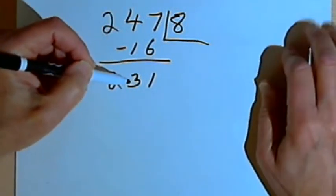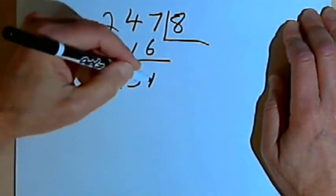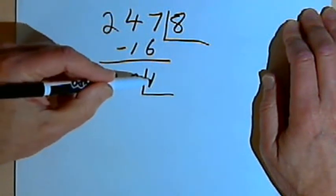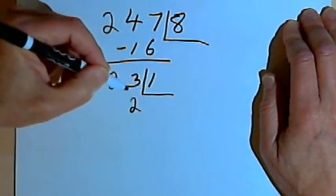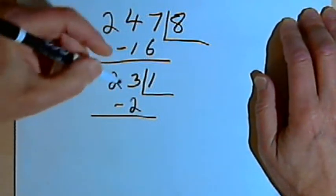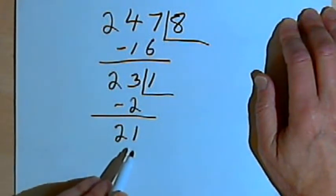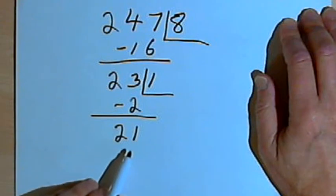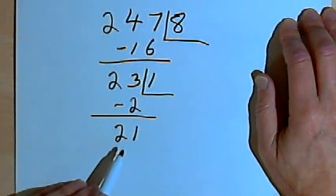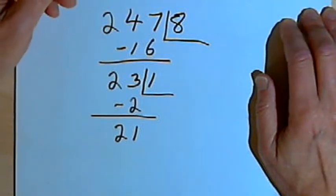Now I haven't ended up with a two-digit number yet, so I'm going to repeat my process. I'll take the 231, take the last digit of that number, the 1, multiply it by 2. 1 times 2 is 2, and subtract that from the other part of the number, the 23. So 23 minus 2 is 21. Now I'm down to a two-digit number. When I get to a two-digit number, I see if that's divisible by 7. So 21 is 3 times 7, so it's divisible by 7. That means my original number, 2,478, is also divisible by 7.